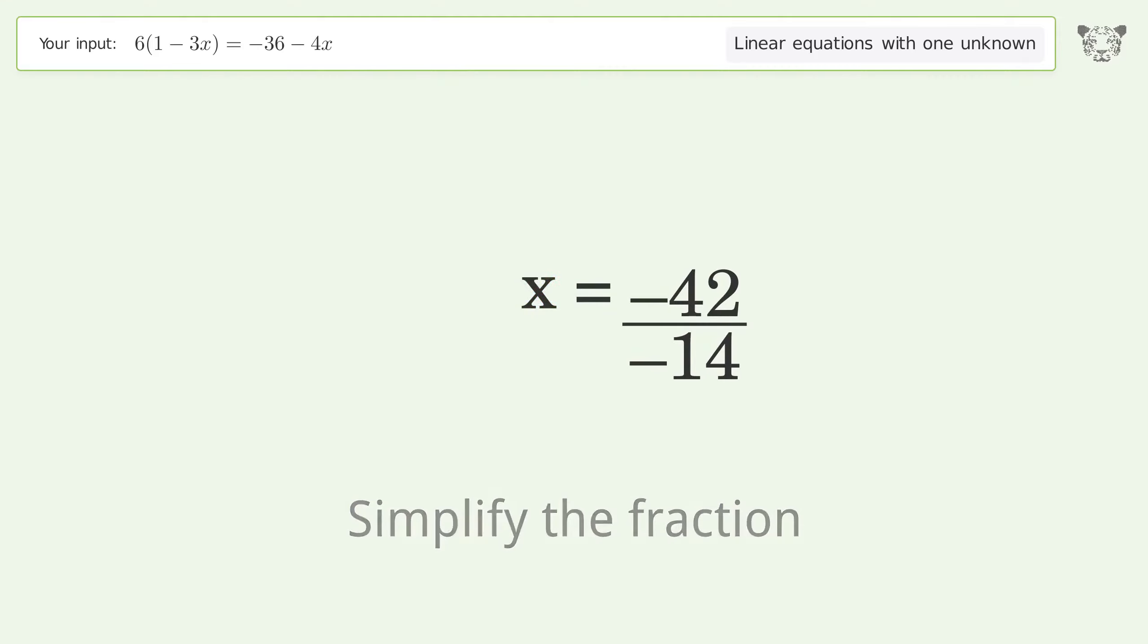Cancel out the negatives. Find the greatest common factor of the numerator and denominator. Factor out and cancel the greatest common factor. And so the final result is x equals 3.